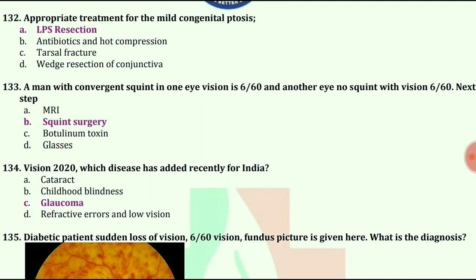A man with convergent squint in one eye, vision 6/60, and another eye no squint with vision 6/6. What's the next step? The answer is squint surgery.